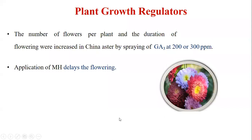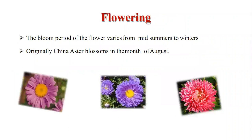Plant growth regulators: The number of flowers per plant and the duration of flowering were increased in China Aster by spraying GA3 at 200–300 ppm. If you want to delay flowering, you can use MH (Maleic Hydrazide). For example, if you plant in September-October and there is no festive season, you can delay flowering with MH and take flowers when the season comes. The bloom period varies from mid-summer to winters. Originally, China Aster blossoms in the month of August — coinciding with Ganesh Chaturthi festival.